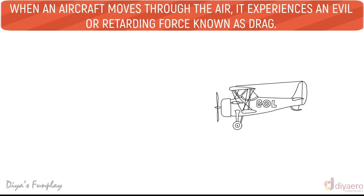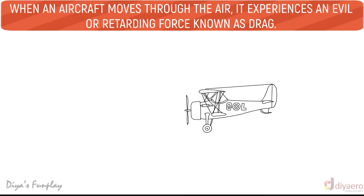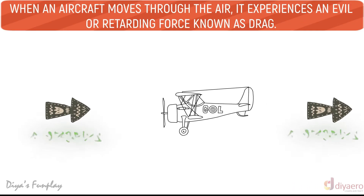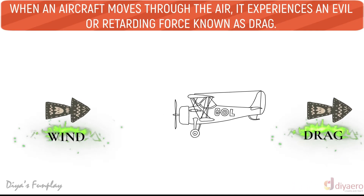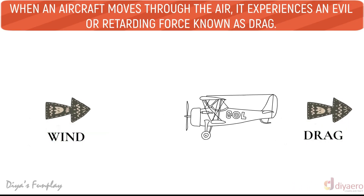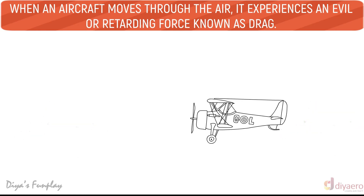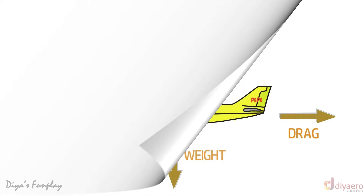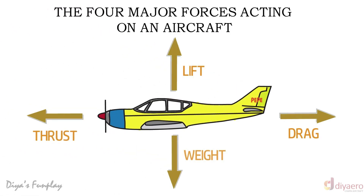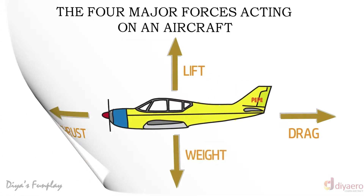When an aircraft moves through the air, it experiences a retarding force known as drag. This drag force will cause the aircraft to slow down if not counteracted properly. In a steady, straight and level flight, the drag is balanced by the thrust produced by the engines.